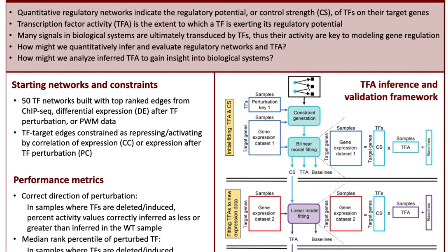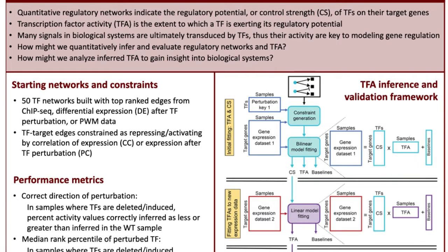Once these edges and relationships are defined, the model can be fitted, where gene expression data sets are matrix-factorized into control strength values, activity values, and gene expression baseline values, which are simply the expression levels of genes in the absence of any transcription factor info. Once all of these values are fitted, the control strength values are then passed down for a second round of fitting.